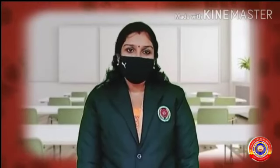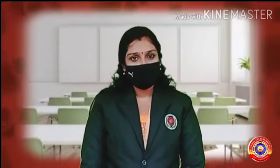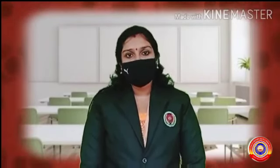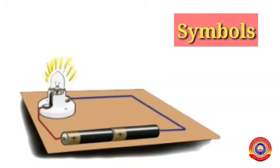Welcome back. In the last class we started our new chapter on when current flows. We learned about conductors and insulators. Remember this figure here — the figures of the sources of electricity and the devices were drawn. This is very difficult, isn't it? So we are going to give symbols to each of them while drawing circuits.